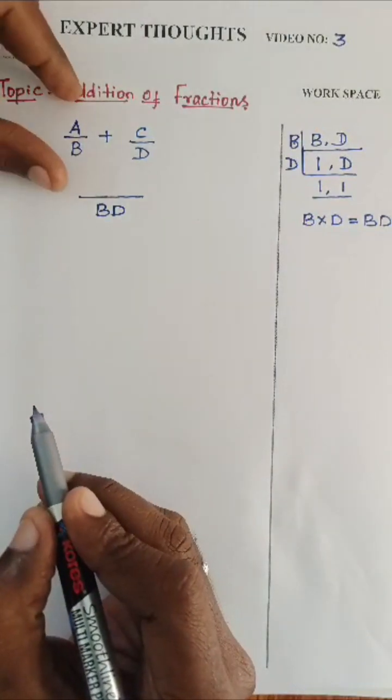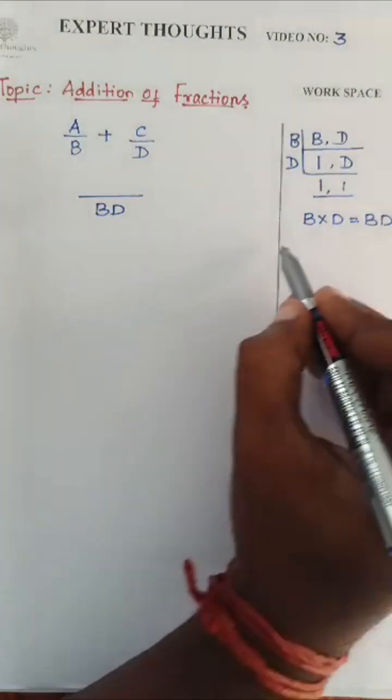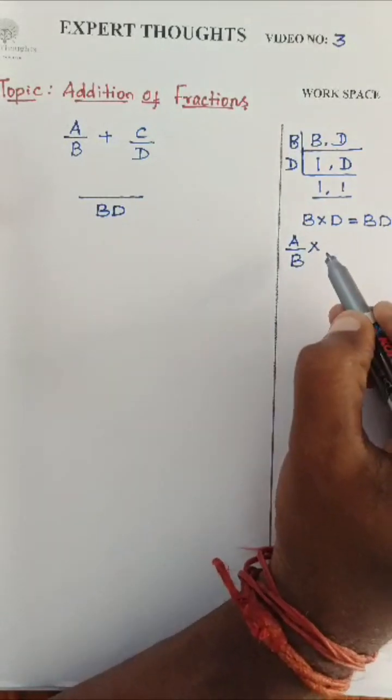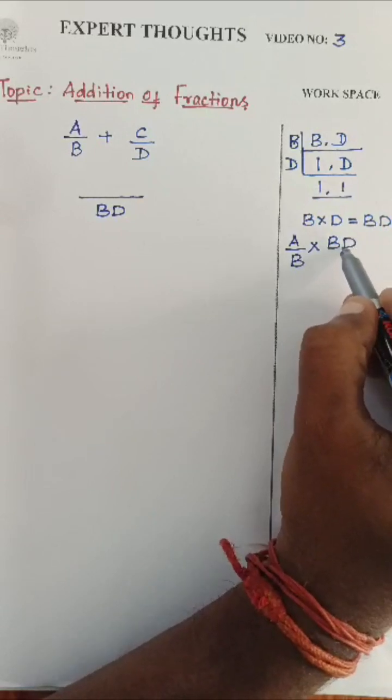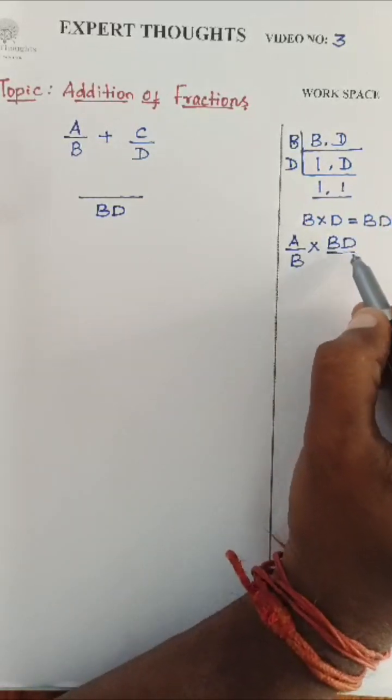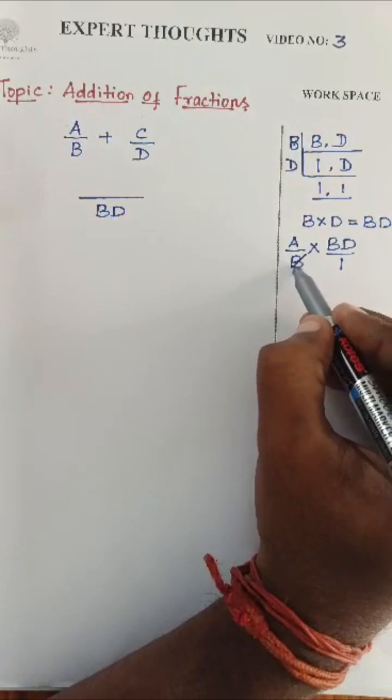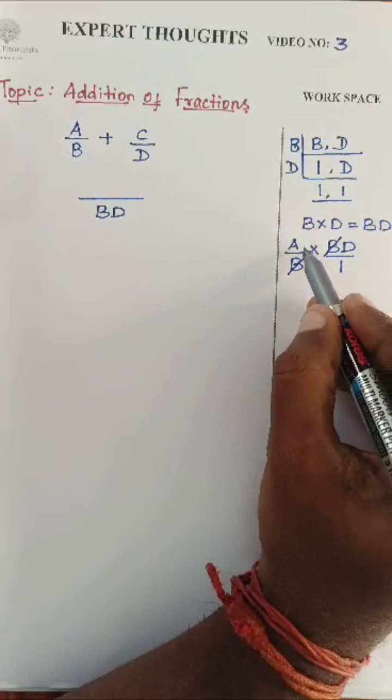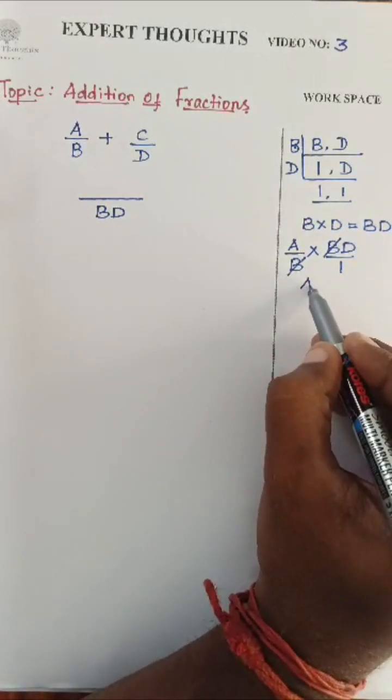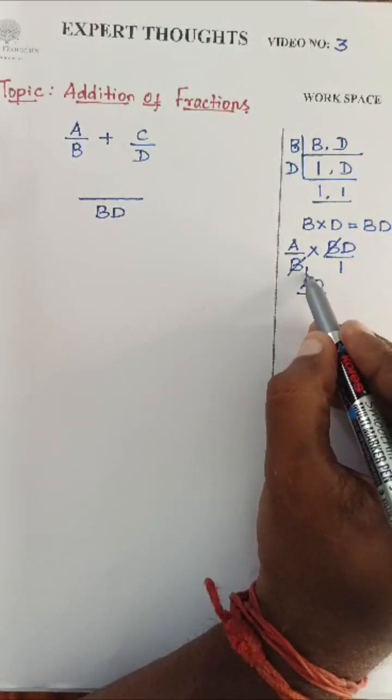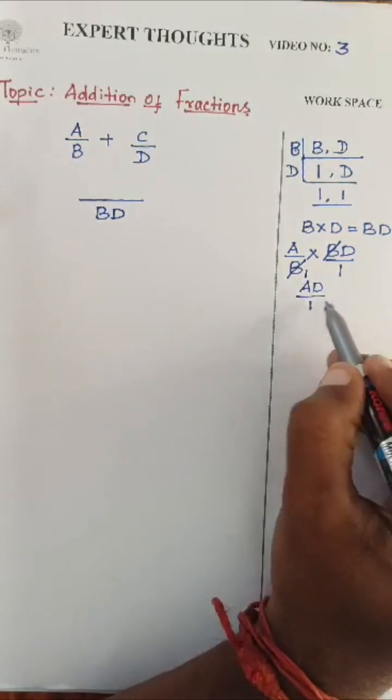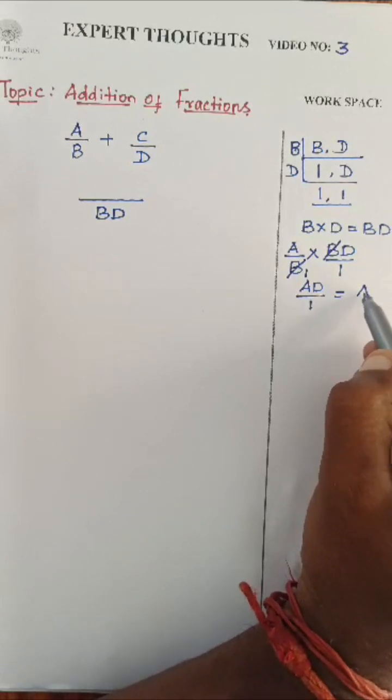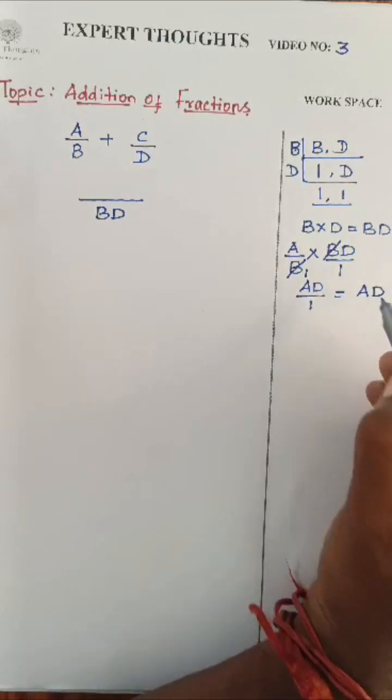Now, I will take this particular term, which is nothing but A divided by B into the LCM, what we got BD. If it is nothing here, it is divided by 1. The denominator B and the numerator B gets cancelled. Now, it will become A into D, AD divided by, this is nothing but 1. 1 into 1, 1. AD divided by 1. Any number divided by 1 will be the same number, which is nothing but AD.